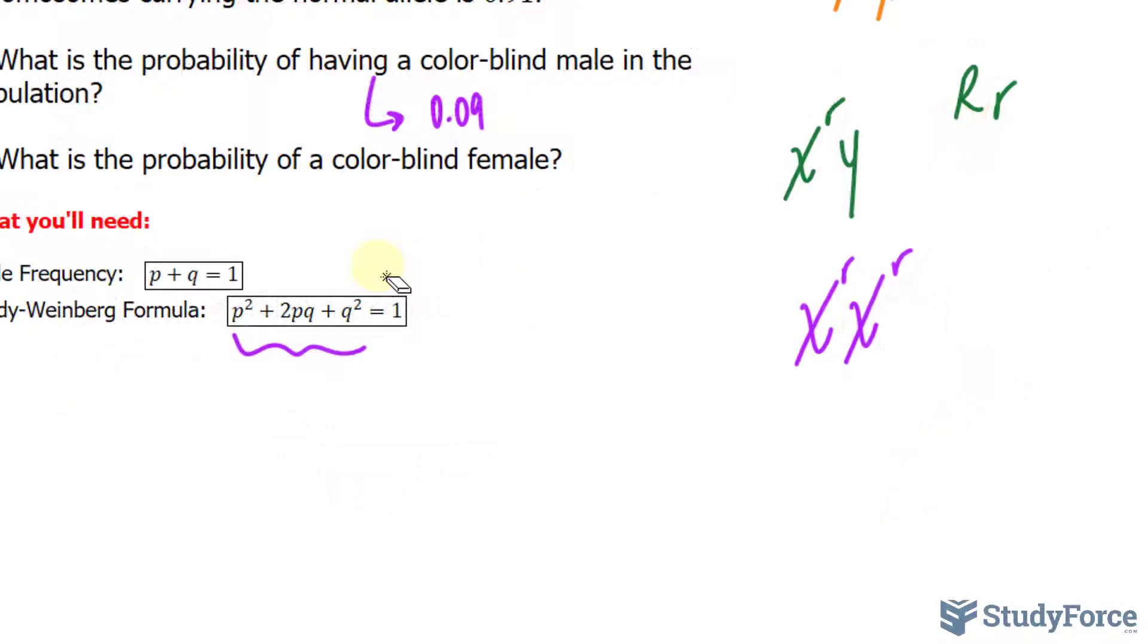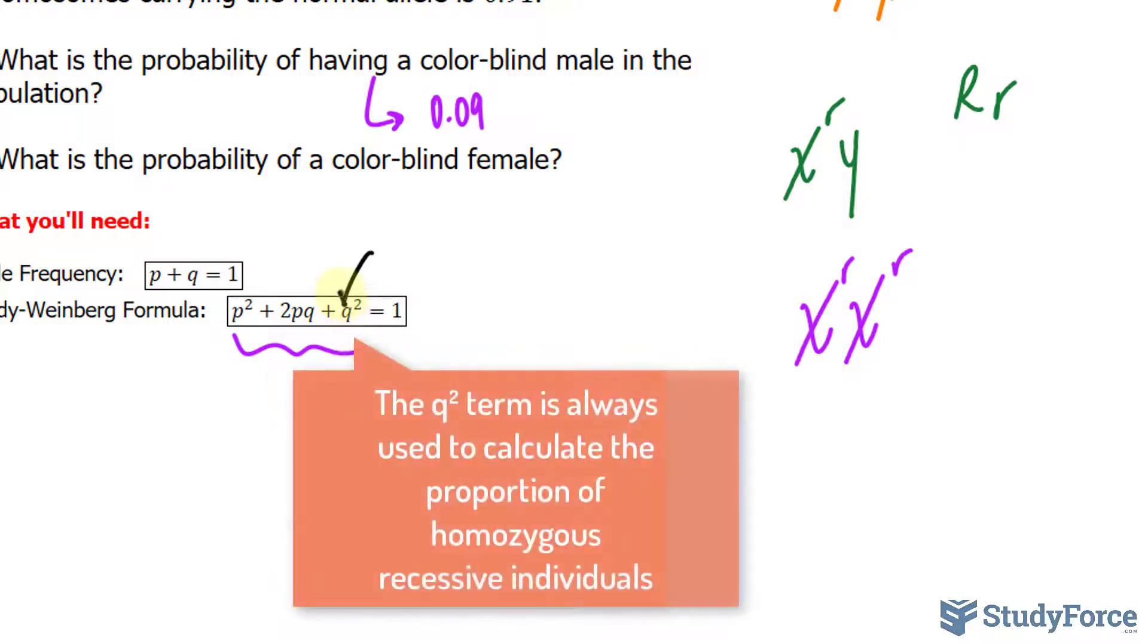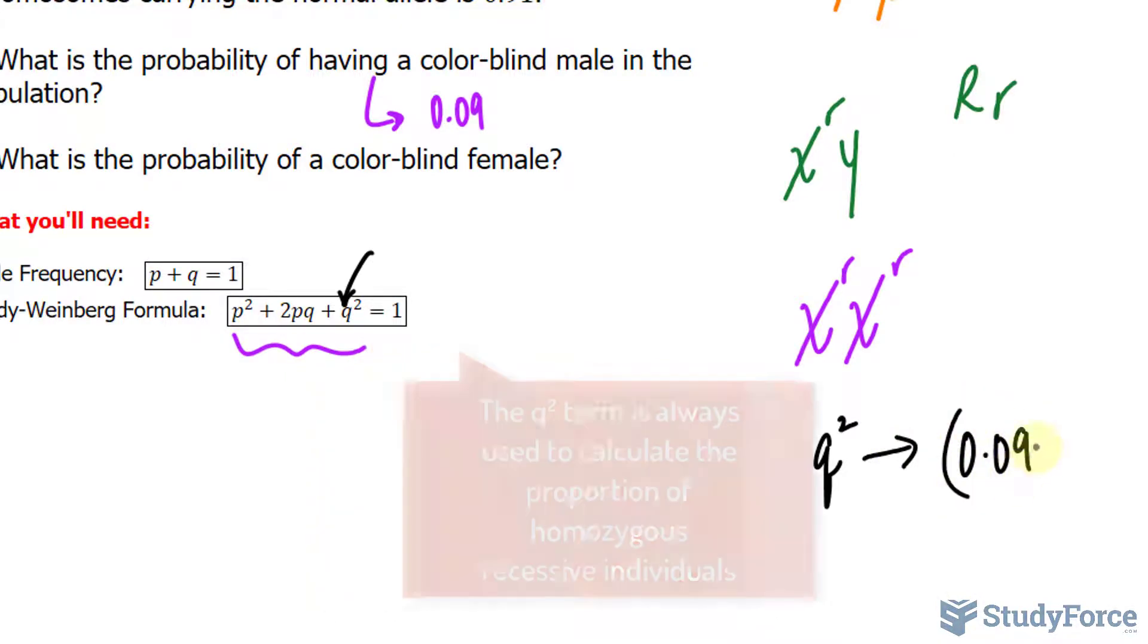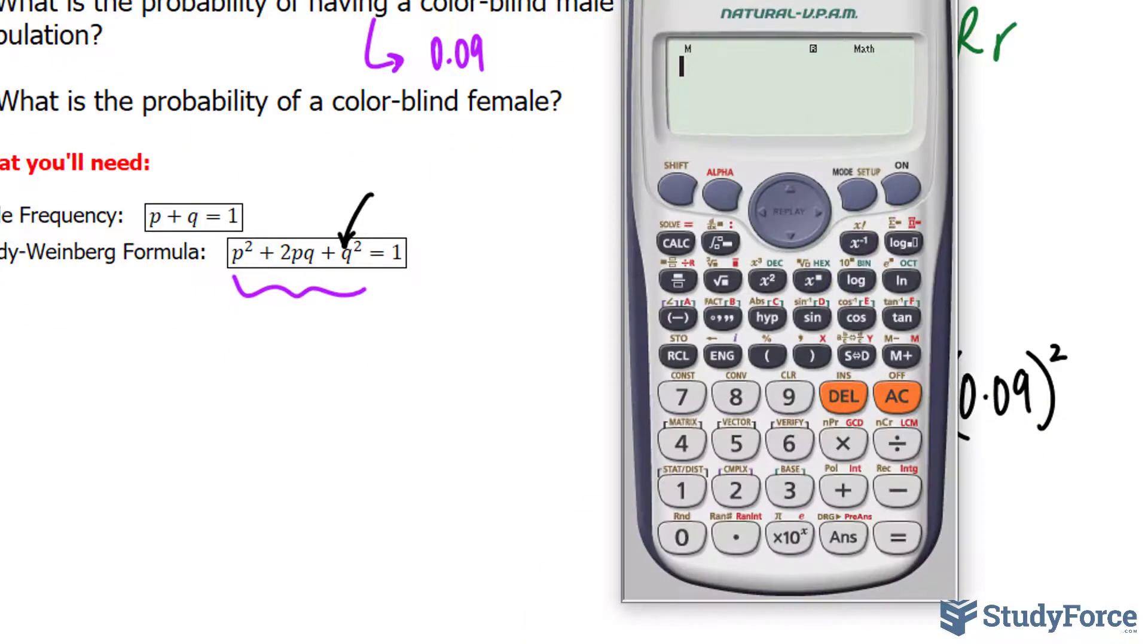What we will do is take the value of 0.09 and substitute it right into q. So I get 0.09 raised to the power of 2, and this will give us the frequency of homozygous recessive females in this population, the probability.